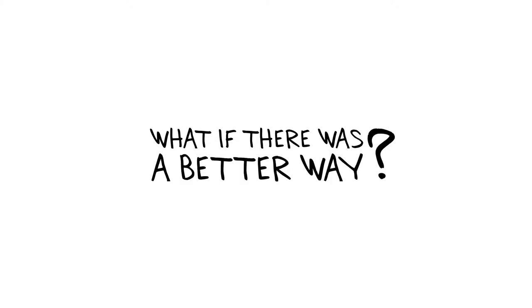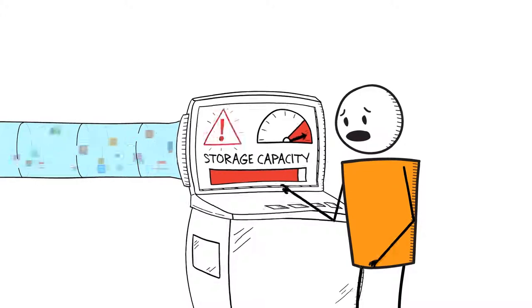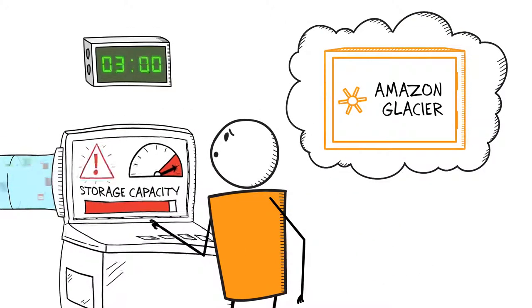What if there was a better way? Amazon Glacier is an extremely low-cost, secure, and durable storage service for data archiving and backup. It's designed to keep costs low and is optimized for cold data where retrieval times of three to five hours are suitable.